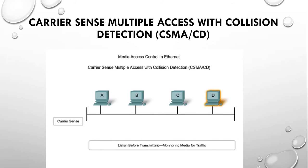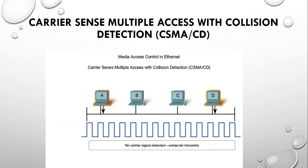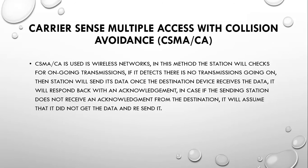Carrier sense multiple access with collision avoidance (CSMA/CA) is used in wireless networks. The station checks for ongoing transmissions. If no transmission is detected, the station sends its data. Once the destination device receives the data, it responds with an acknowledgement. If the sending station does not receive an acknowledgement, it assumes the data was not received and resends it.